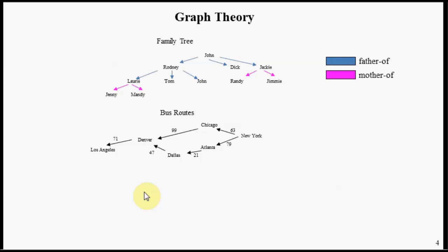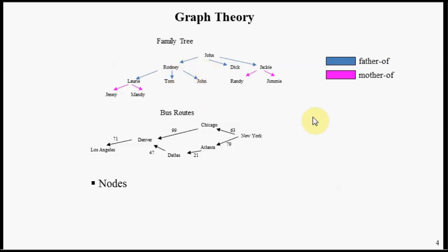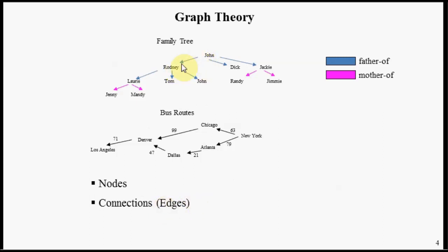We're going to start by doing a little graph theory. In front of us are two graphs: a family tree and a graph of bus routes. Some of the components of a graph consist of the following: the notion of something called nodes. In this family tree graph, the nodes happen to be the names of people. A second component of graphs are connections, or edges, and they happen to be the arrows we see between nodes.